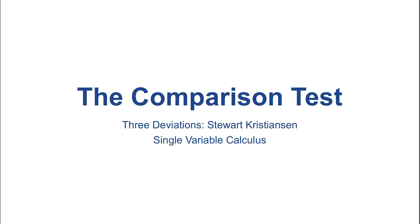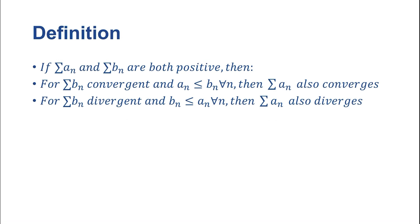So let's get started by defining what the comparison test is. If we have two series — the series of a sub n and the series of b sub n — and they're both positive, then if b sub n is convergent, and for all n, b sub n is greater than a sub n,